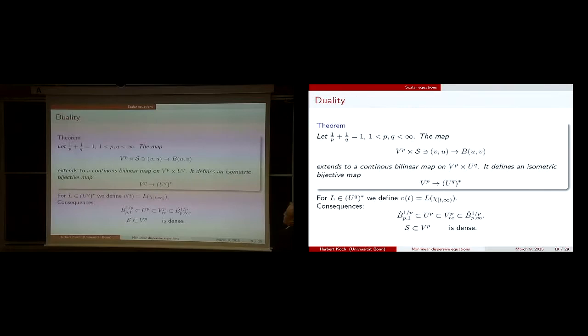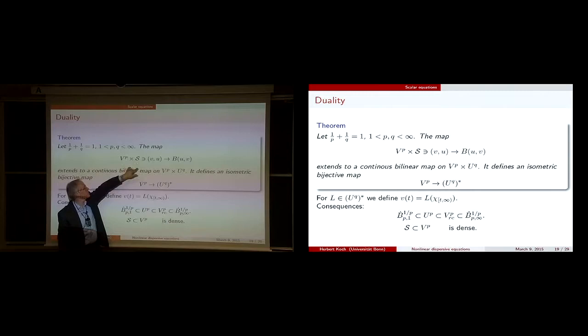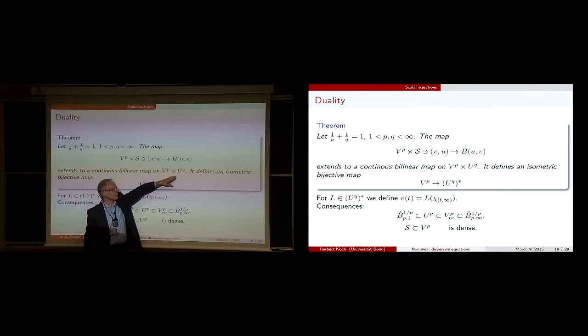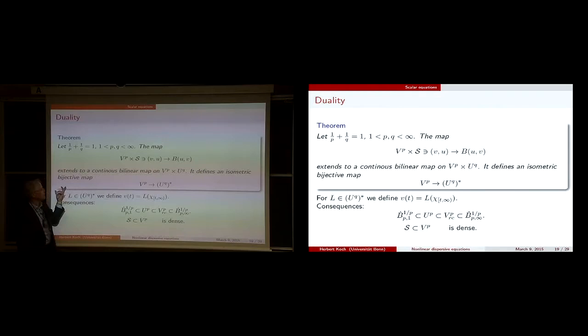Now let me come to duality. If you look at V^p (which sits in R), we defined this pairing for these functions, and it extends to a continuous bilinear map on V^p times U^q, where 1/p + 1/q = 1. This finds an isometric bi-surjective map from V^p to (U^q)^*, the dual space. That is the duality.